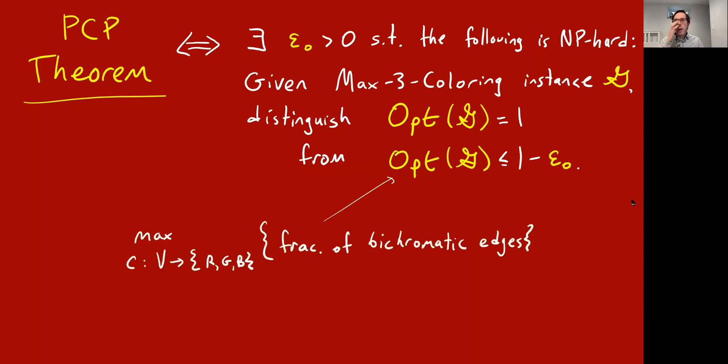You'll only get 99% of the edges at most. I should have said monochromatic there. You'll only get 99% of the edges at most bichromatic, like you're supposed to in coloring problems.